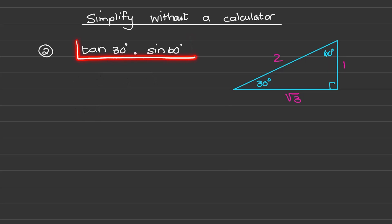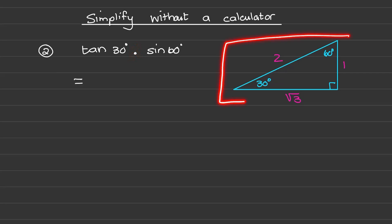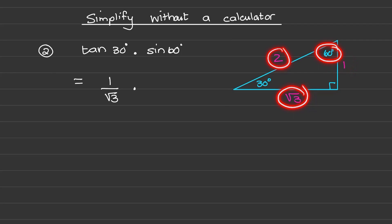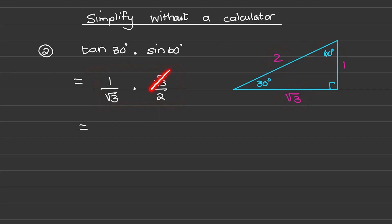We can also use the special angles when we have two trig ratios that we are multiplying with each other, using the same triangle from memory as before. The tan of 30 is the opposite over the adjacent, that is 1 over square root 3, and the sine of 60 is square root of 3 over 2. To simplify this multiplication, the square root of 3 in the numerator cancels out the square root of 3 in the denominator, so I am left with 1 over 2.